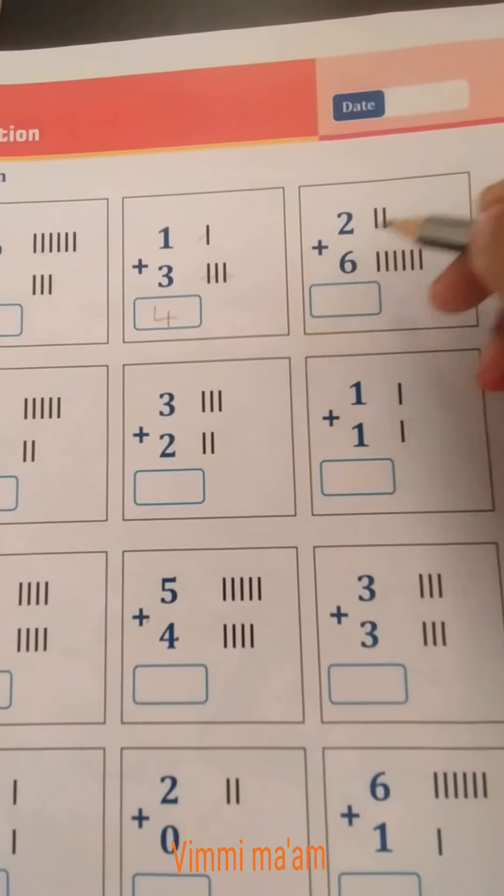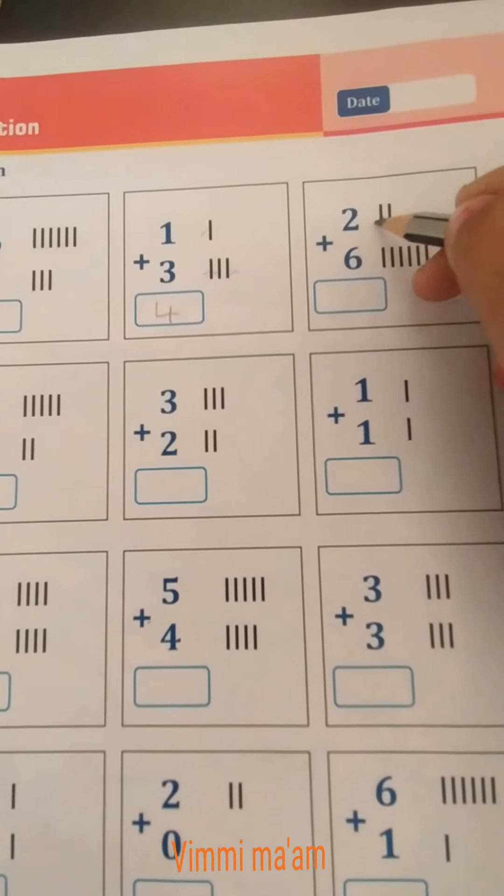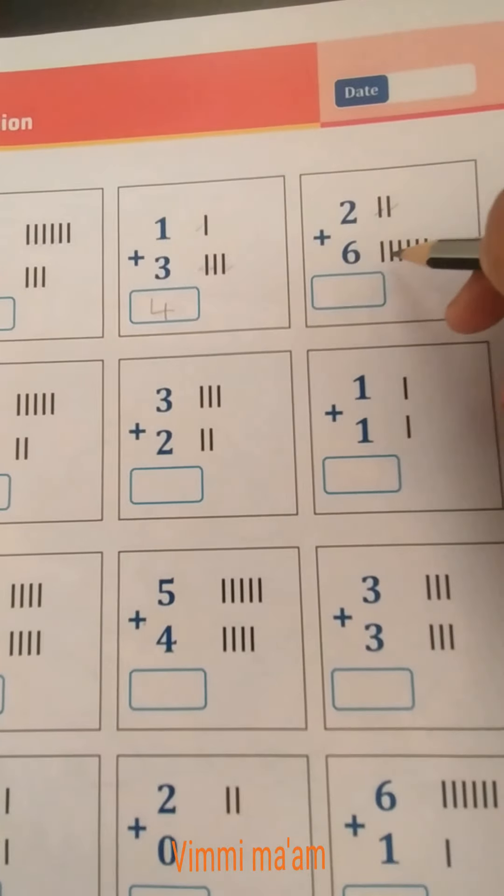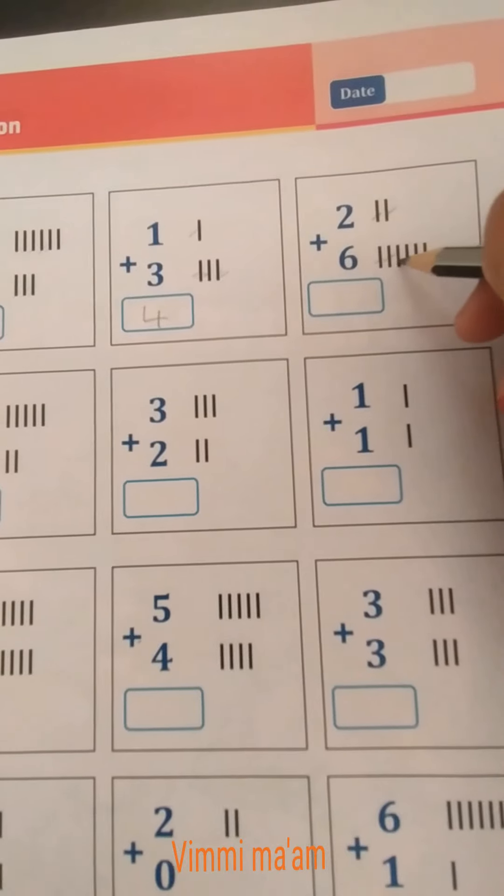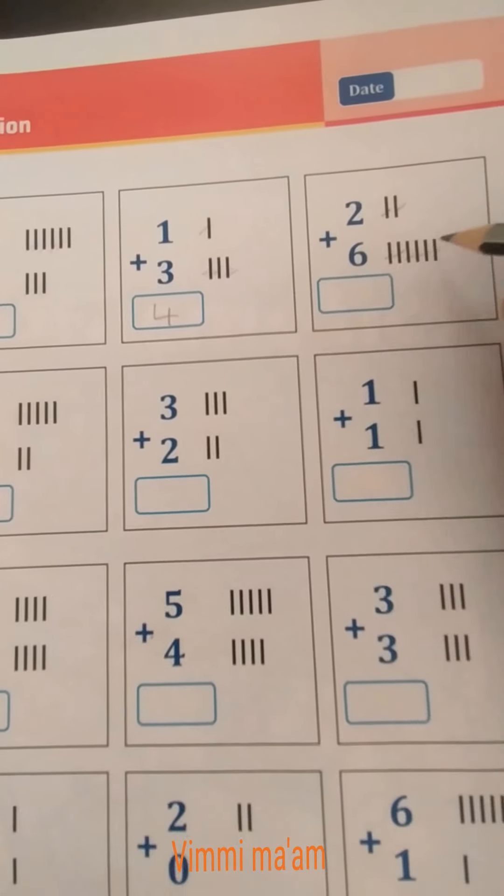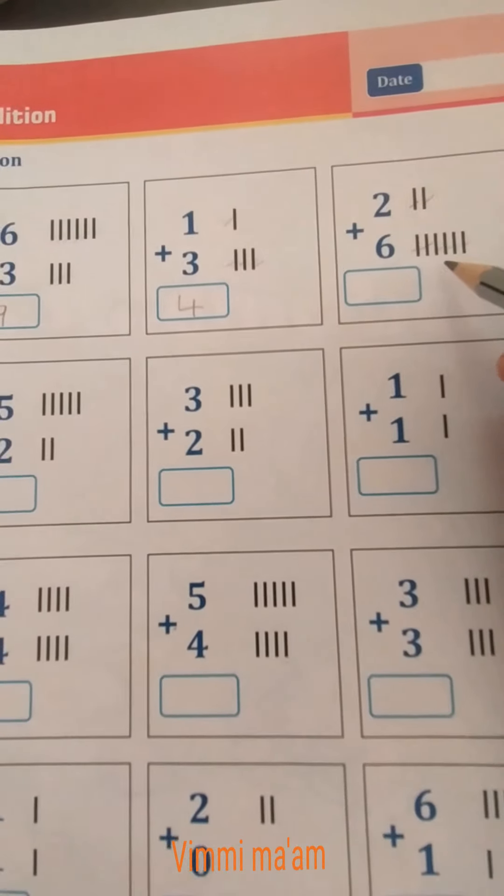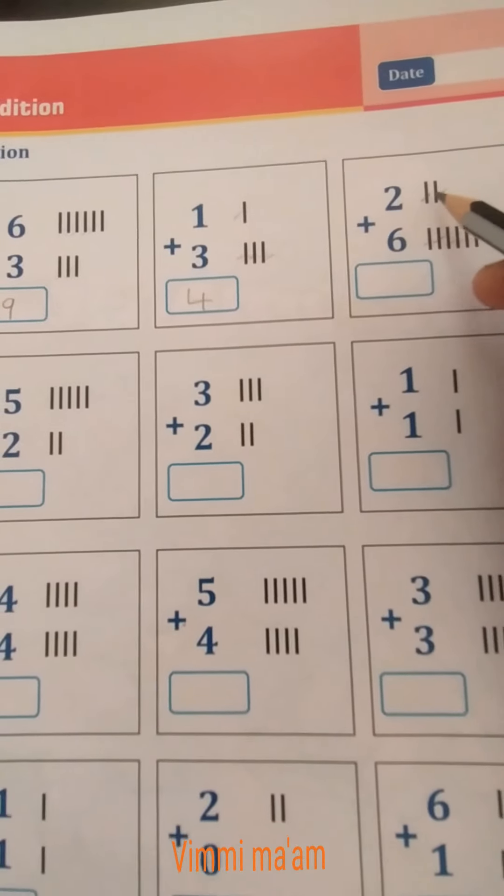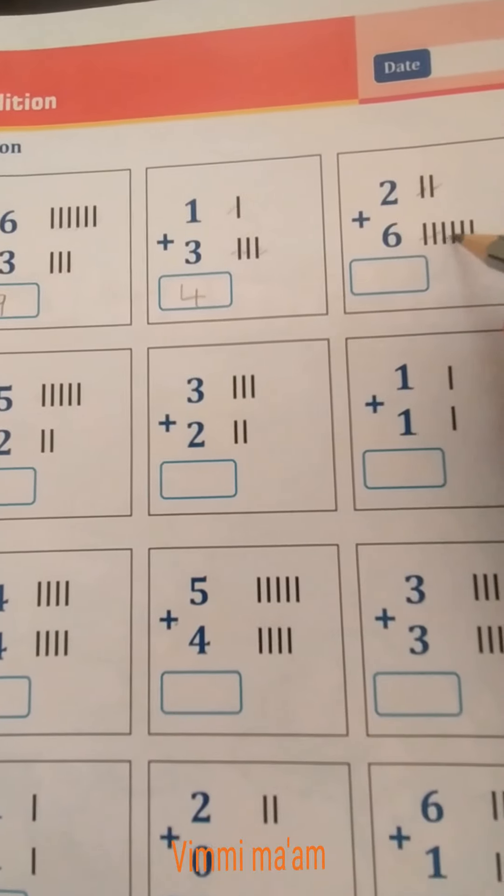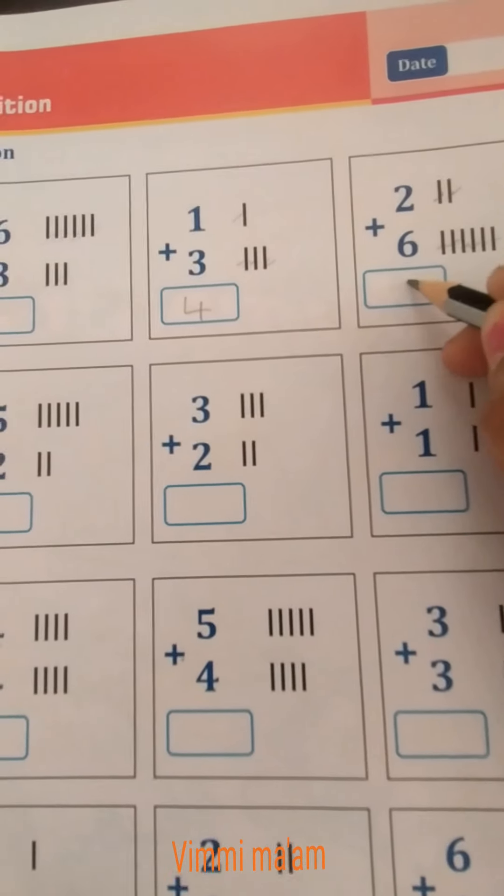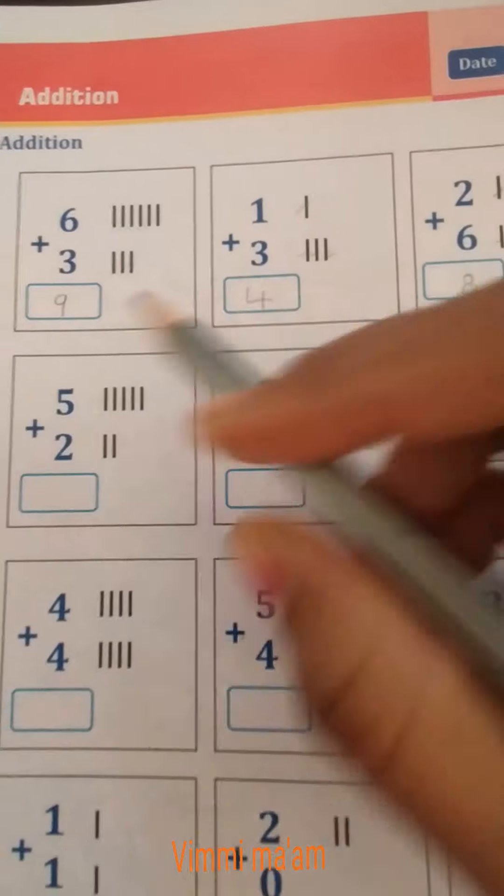Now next. 2 plus 6. For 2, we draw 2 lines: 1, 2. For 6, we draw 6 lines: 1, 2, 3, 4, 5, 6. 2 plus 6, how many lines total? 1, 2, 3, 4, 5, 6, 7, 8. 8 lines.